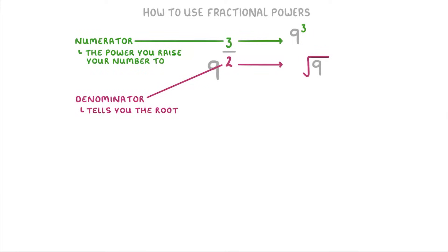The problem is we can't do both operations at once, so we'll have to do one first and then the other. For example, we could do 9 cubed, which is 729, then square root it to get 27. Or we could take the square root of 9 first to get 3, then cube that to get 27.